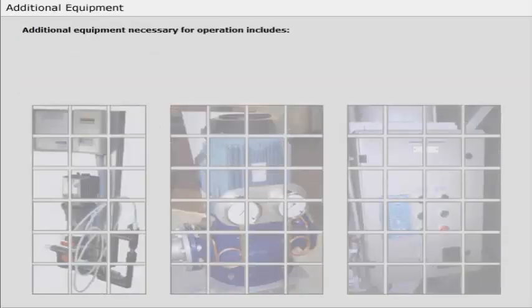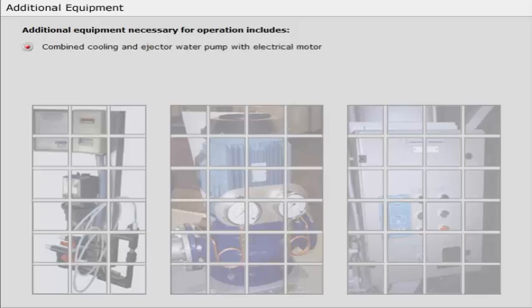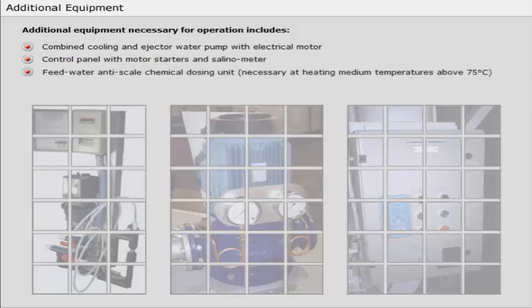Additional equipment necessary for operation includes combined cooling and ejector water pump with electrical motor, control panel with motor starters and salinometer, and feed water anti-scale chemical dosing unit necessary at heating medium temperatures above 75 degrees Celsius.